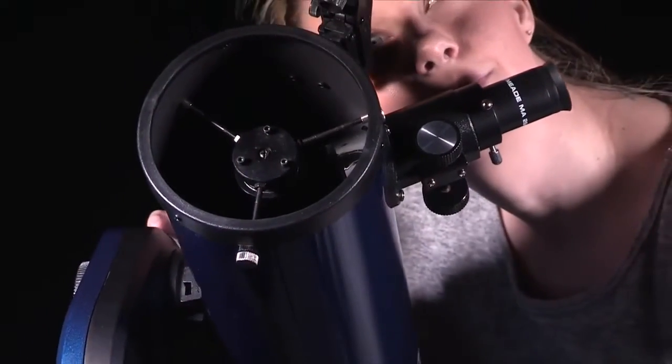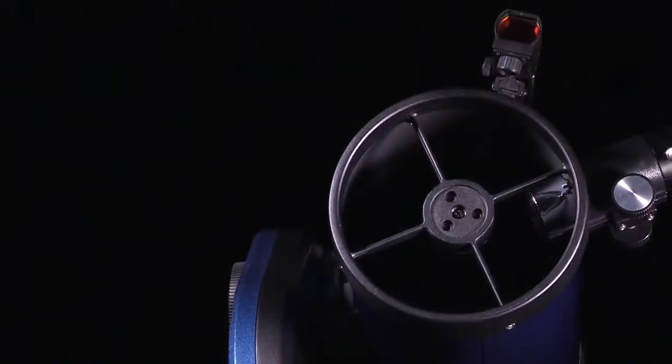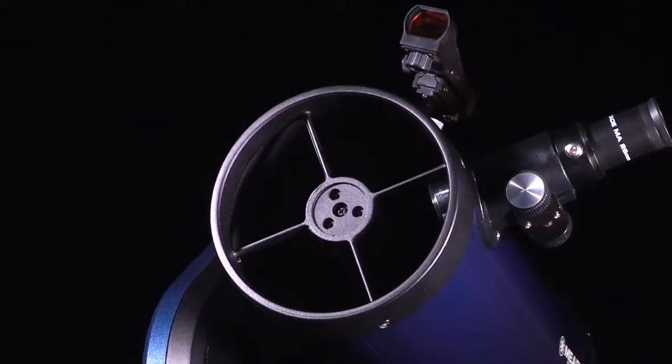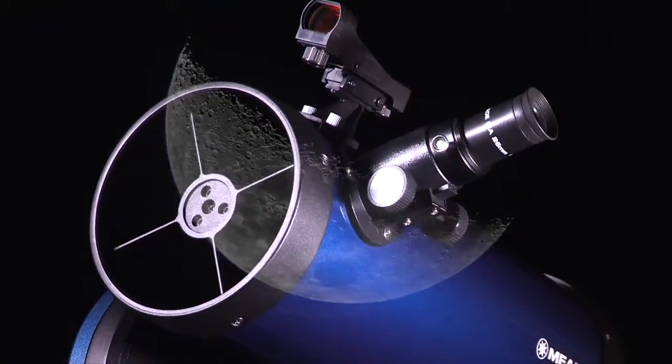Looking through the viewfinder, turn the viewfinder's two alignment screws until the viewfinder's red dot points precisely at the same object as centered in the eyepiece. The red dot viewfinder is now aligned to the main telescope. Check this alignment on a celestial object, such as the moon or a bright star, to make any necessary refinements.